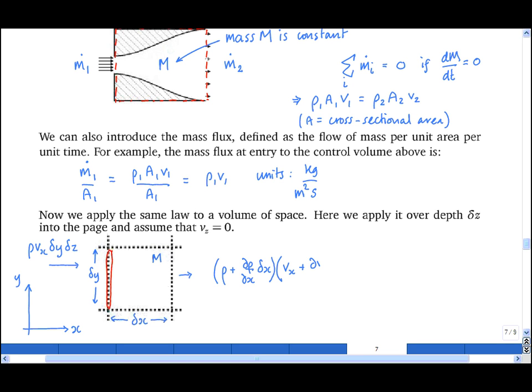This is multiplied again by delta y and by delta z. So what I have here is that this term is the density change in the x direction, and this term here is the velocity change in the x direction.